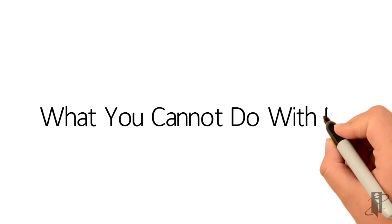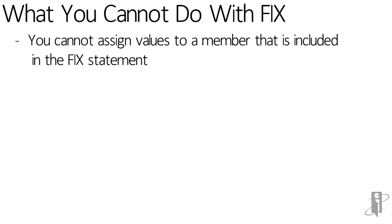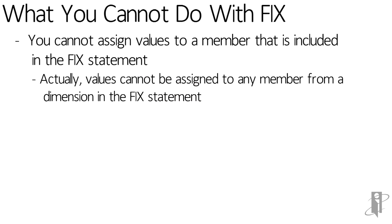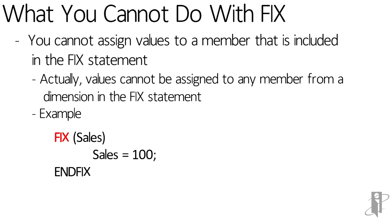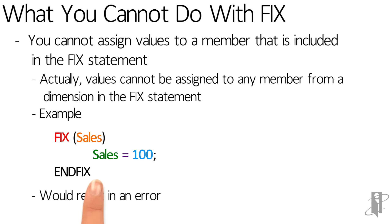There are some things you can't do with a FIX. You can't fix on a member and then do something to that member within the FIX. For example, you're unlikely to write FIX on Sales, Sales = 100 — in that case you don't even need the FIX, just say Sales = 100. But you might think you can fix on @DESCENDANTS of West and then down below say California equals this, Oregon equals this. You can't do that. If you're fixing on a dimension, you can't then specify that dimension on the left side of an assignment within the FIX — it will just error out.